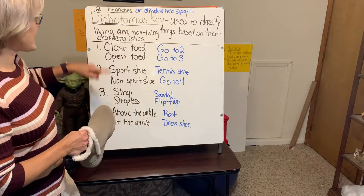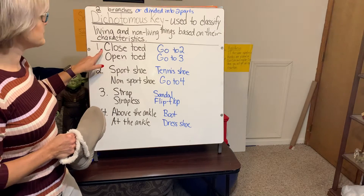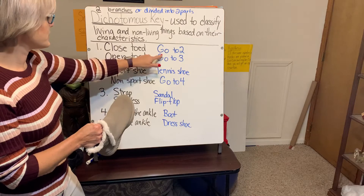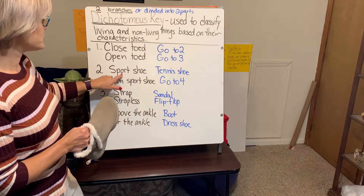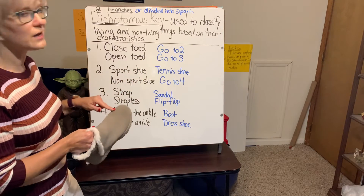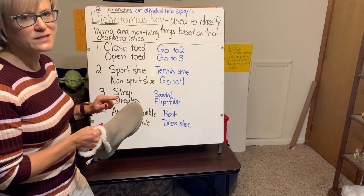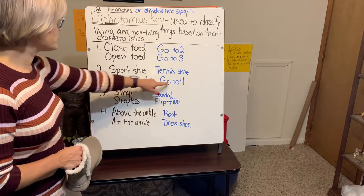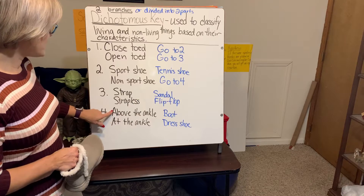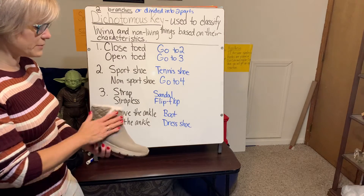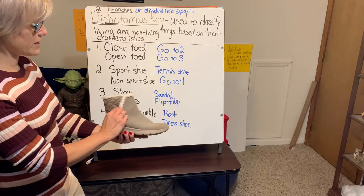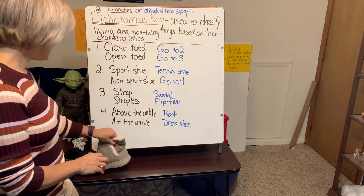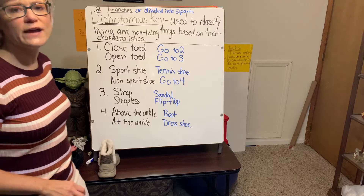Last shoe — back to the top. Closed-toed or open-toed? This is closed-toed, so I go to number two. Sport shoe or non-sport shoe? I don't think these would be comfortable to run in, so it's a non-sport shoe — go to number four. Above the ankle or at the ankle? This is above the ankle, so this is my boot. I've now classified all of my different shoes.